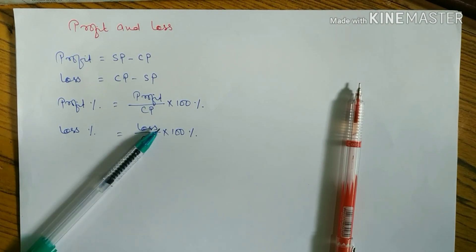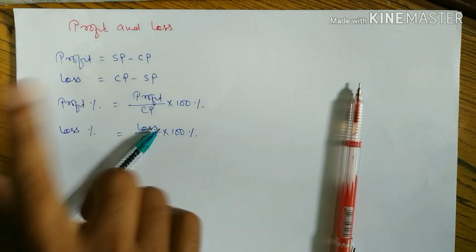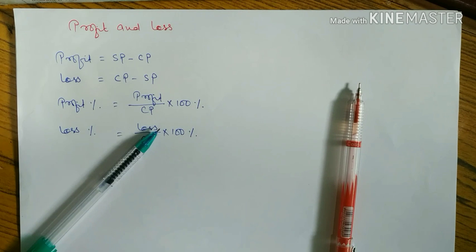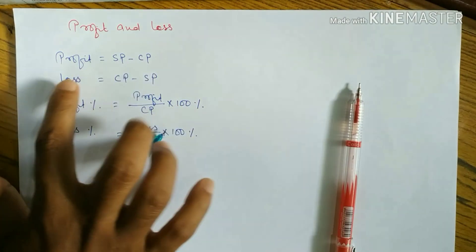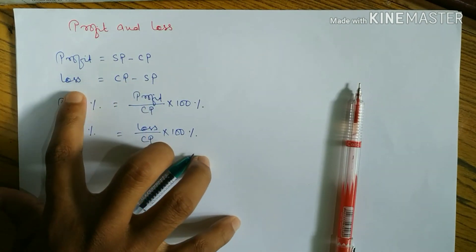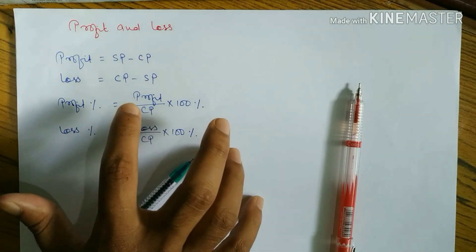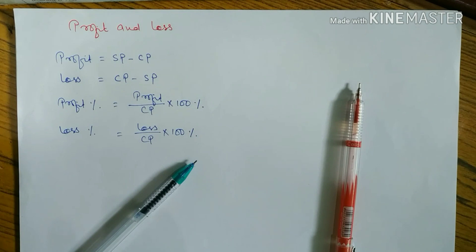You have to learn all these formulas. SP means selling price and CP means cost price. Cost price is the price at which an article is purchased. Selling price is the price at which an article is sold. When selling price is greater than cost price, find profit. When cost price is greater than selling price, find loss. Profit% = (Profit / CP) × 100, and Loss% = (Loss / CP) × 100.